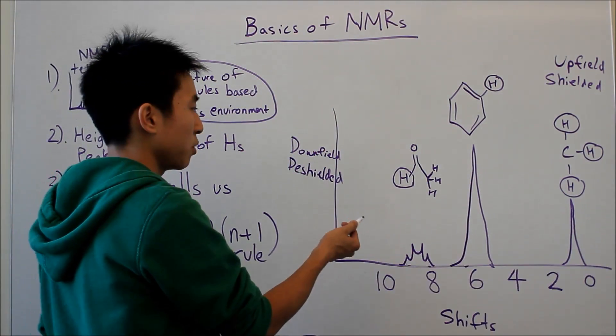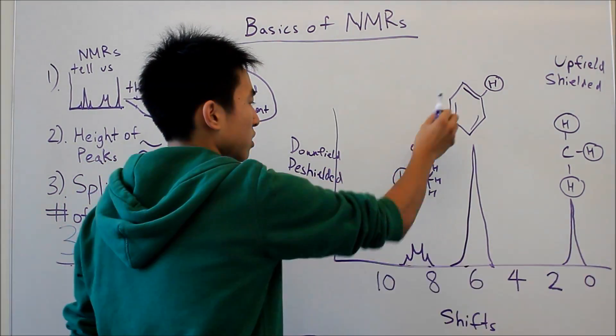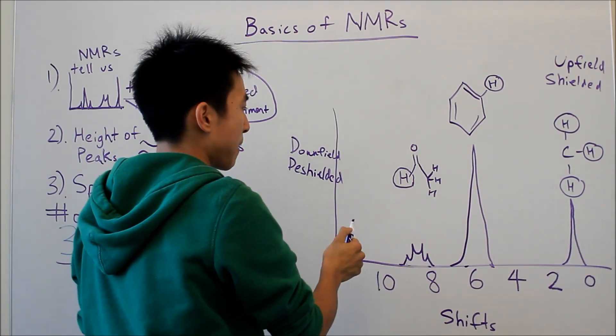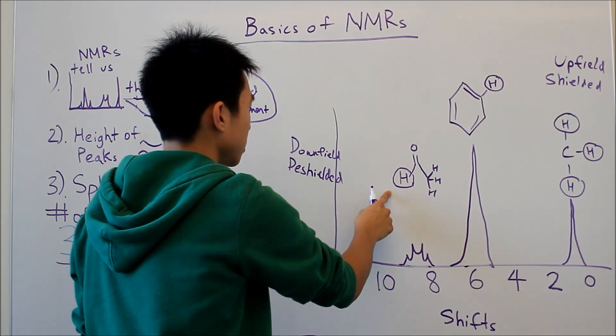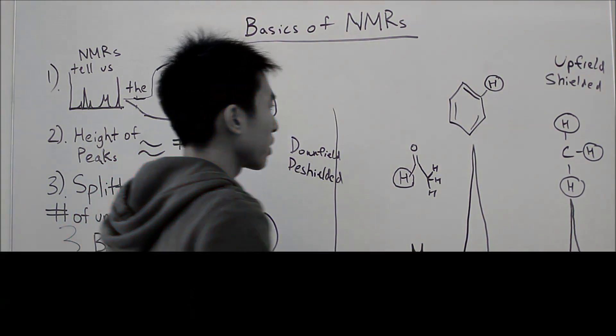So an example here would be the aldehyde. It's electron withdrawing, so all the electrons are away from the hydrogen, and now the hydrogen is deshielded, and it's probably going to show up on NMRs around like 8-ish.